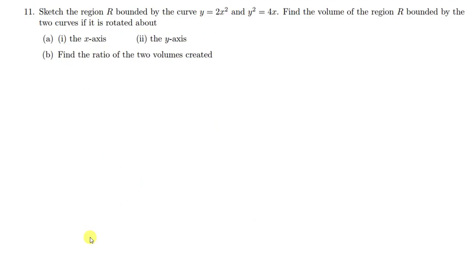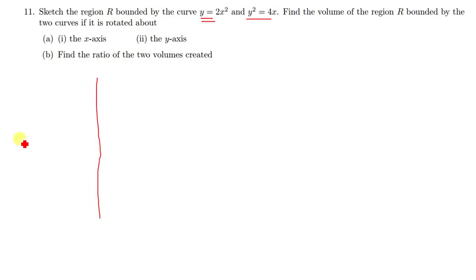Let's proceed to the next question. The region R is bounded by two curves. Find the volume of the region bounded by the two curves if it is rotated about the x-axis and the y-axis, then find the ratio of the two volumes created. First, you need to sketch the curves. When y equals 2x squared and the other curve, sketching these two curves — this one is a parabola.